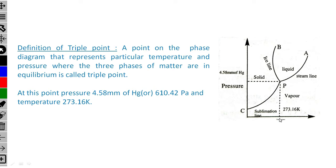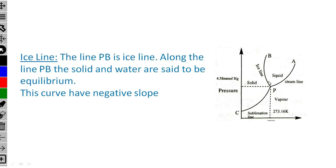There are three lines on the phase diagram. The first is the ice line. The line PB is the ice line — along line PB, the solid and liquid water are said to be at equilibrium. It represents the boundary between the solid state and the liquid state. This boundary of solid and liquid, the curve PB, has a negative slope.